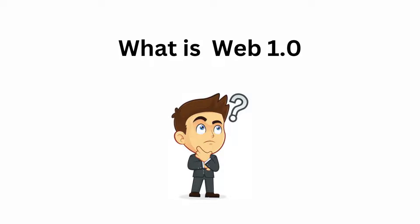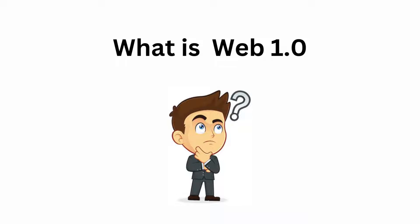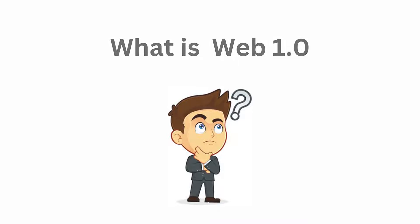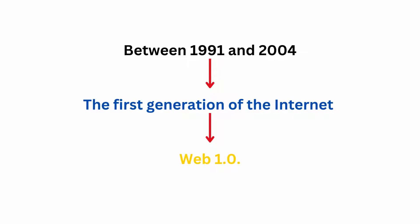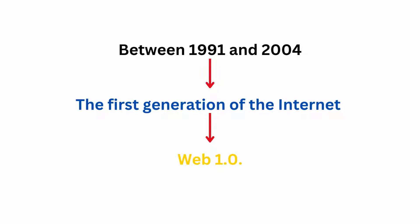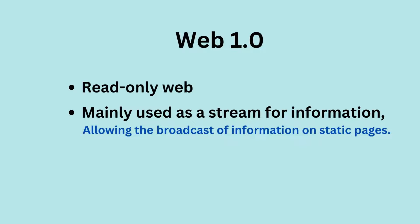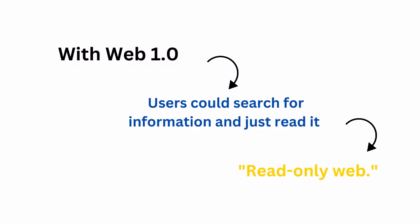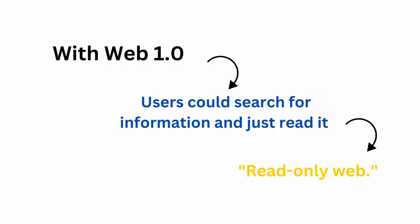Before we dive into the differences between Web 2 and Web 3, let's first take a step back and understand what Web 1 is. Between 1991 and 2004, the first generation of the Internet existed, and this version is known as Web 1. Web 1 was a read-only web and was mainly used as a stream for information, allowing the broadcast of information on static pages. With Web 1, users could search for information and just read it, hence the term read-only web.